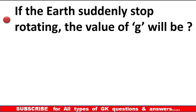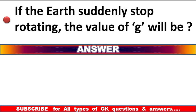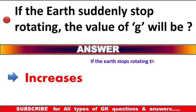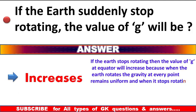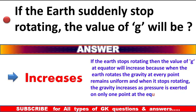If the Earth suddenly stops rotating, the value of G will be? The value of G at the equator will increase, because when the Earth rotates, the gravity at every point remains uniform or the same. When it stops rotating, the gravity increases as pressure is exerted on only one point at the equator.